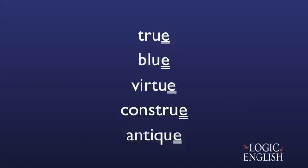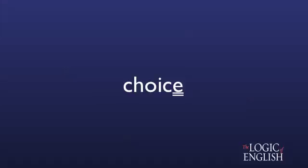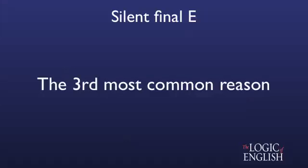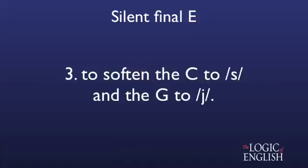The next time your student asks you why we have a silent final E in 'choice,' you may tell them: because without the E, it would say 'choik.' Or why do we have a silent final E in 'large'? Because without the E, it would say 'larg.' This is because the third most common reason for a silent final E is to soften the C to S and the G to J.